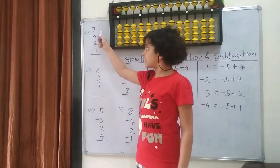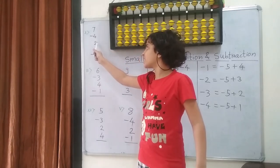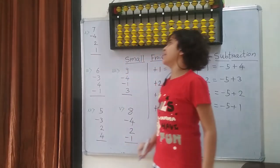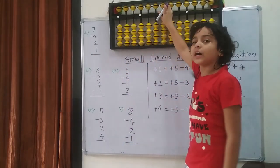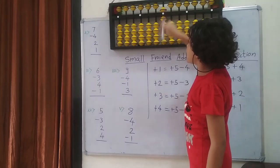First question: 7 minus 4 plus 2 plus 1. So first on the backwards, I am going to put 7. So 5, 6, 7.